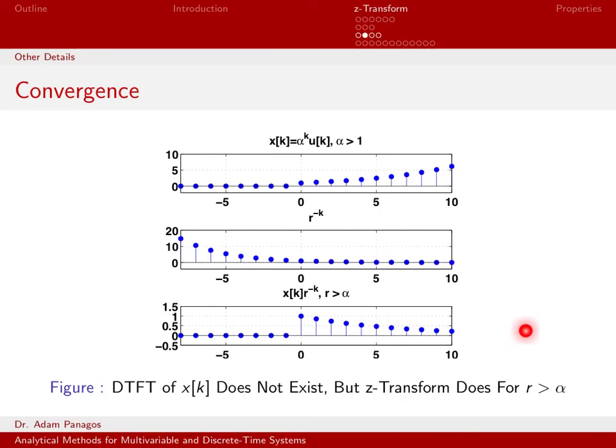So here in this final plot, as k is getting larger, I'm still decaying. So this is very interesting. If I handed you this signal x of k and said compute the DTFT of that signal, you would tell me, sorry, you can't do that. This is not an absolutely summable signal. So the DTFT does not exist.